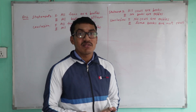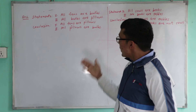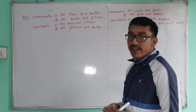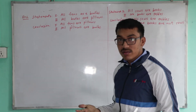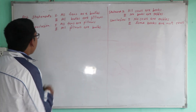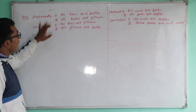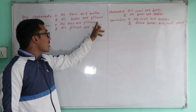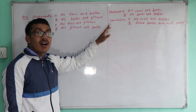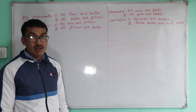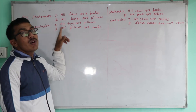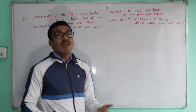I will discuss two examples of logical deductions. The two examples will be done — the first has two statements and two conclusions. The options are: only conclusion I is true, only conclusion II is true, both I and II are true, or neither I nor II is true.